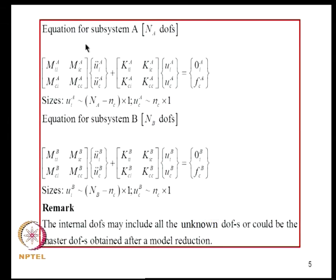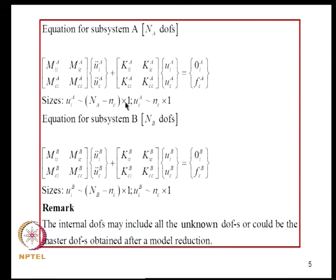For subsystem A, the degrees of freedom are partitioned into interior and coupling degrees of freedom. This partitioning induces a partition on structural matrices, giving K_II^A (I for interior, C for coupling) and the equation of motion is obtained in this partitioned form. There are no external forces, but we must write F_CA because these are coupling forces to be considered later. If NC is the size of UC, then UI^A has N_A - NC degrees of freedom. A similar equation for subsystem B with NB degrees of freedom can also be written.